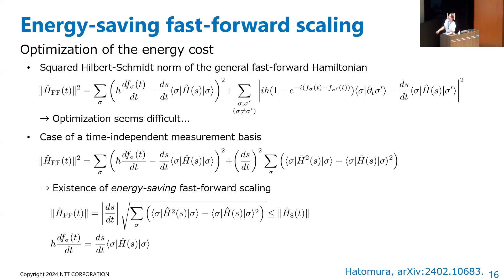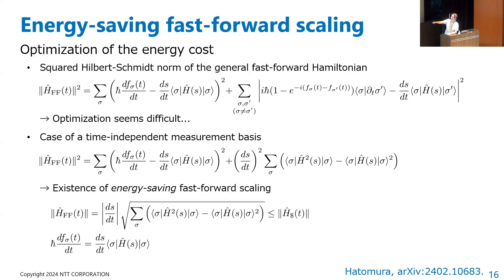I will now discuss whether the energy cost of a general fast-forward Hamiltonian can be smaller than the standard energy cost. The squared norm of the general fast-forward Hamiltonian equals a certain expression. Optimization of this function is difficult because the phase factor properties appear in multiple places, making simultaneous optimization very difficult. However, I noticed that when the measurement basis is independent of time, the phase factor only contributes to one part, making optimization easier.